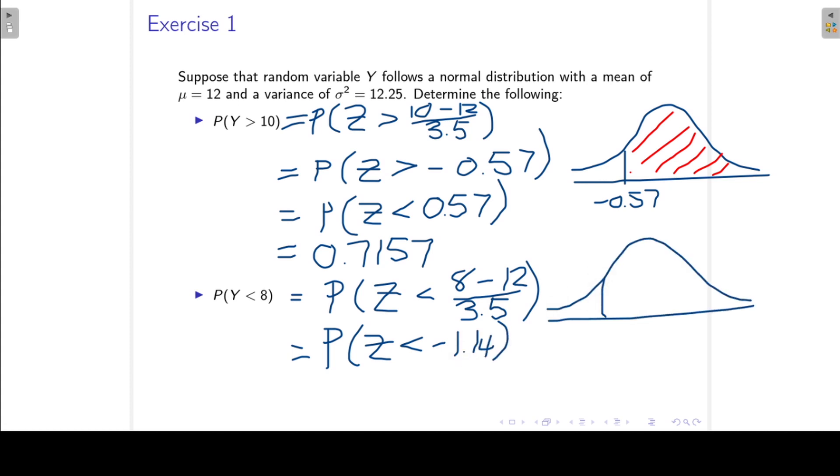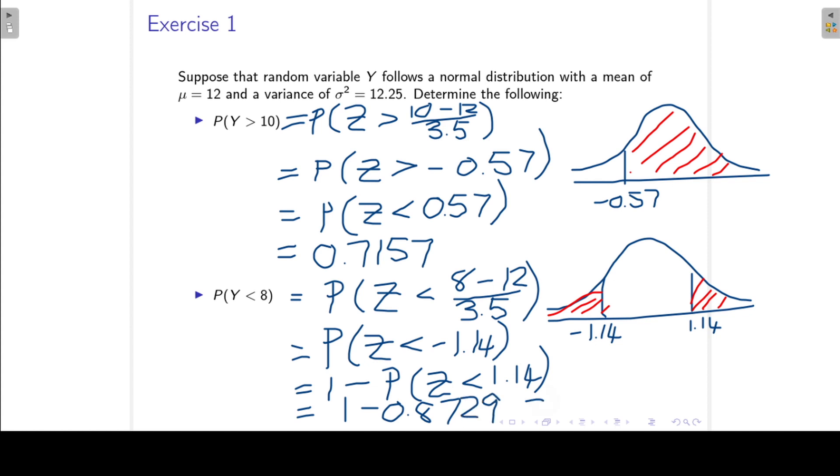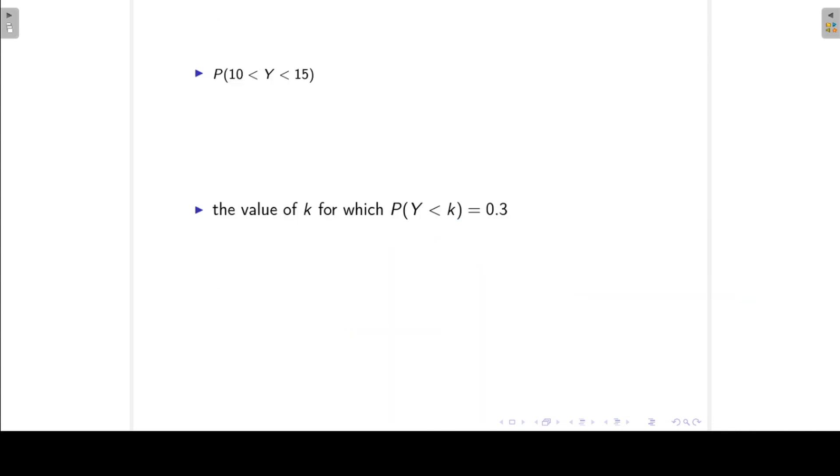In our normal table we want to find the area to the left of negative 1.14 and that is the same as the area to the right of positive 1.14. So that will be 1 minus the probability that Z is less than 1.14. And again we can find it in our tables.